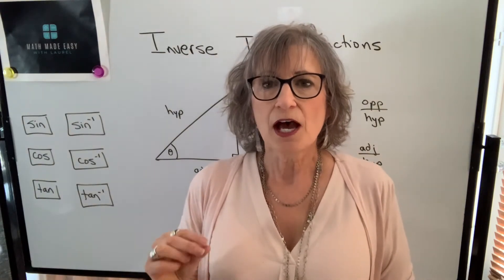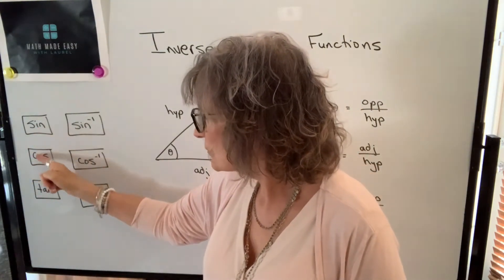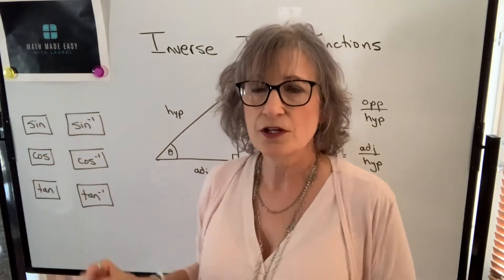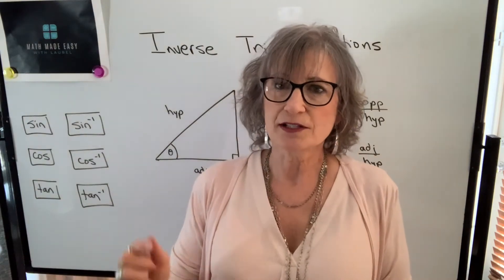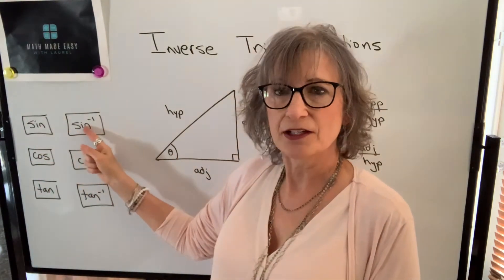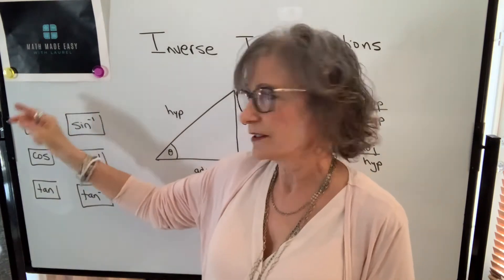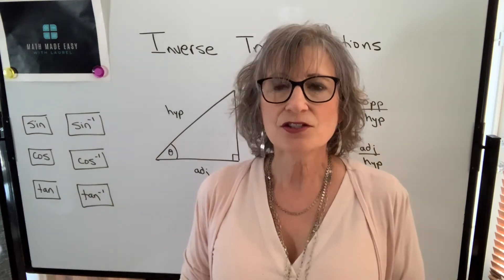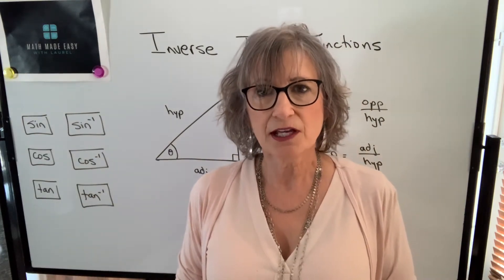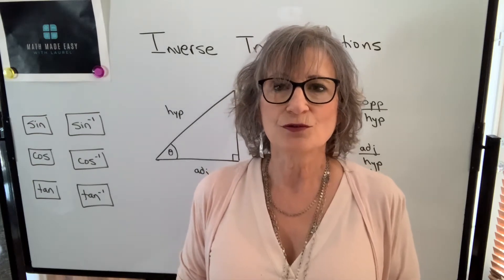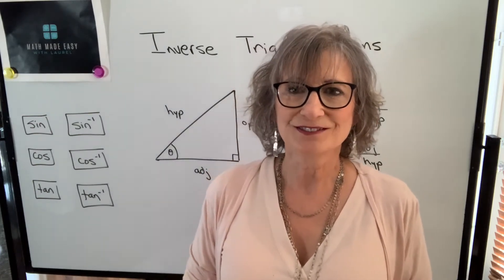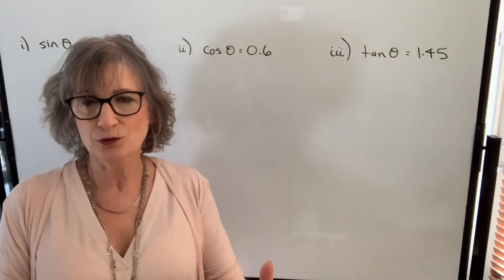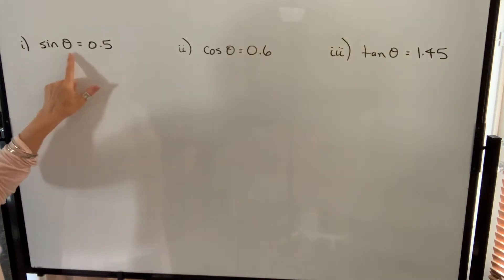You will find those functions above these functions on your calculator — they will be the second or the inverse function. So depending on the calculator you use, you'll have to press inverse sine to get sine to the negative one, or second sine to get sine to the negative one. In the previous video, we knew the angle and we were finding the ratio. Now, we're going to know the ratio, and we're finding the angle.